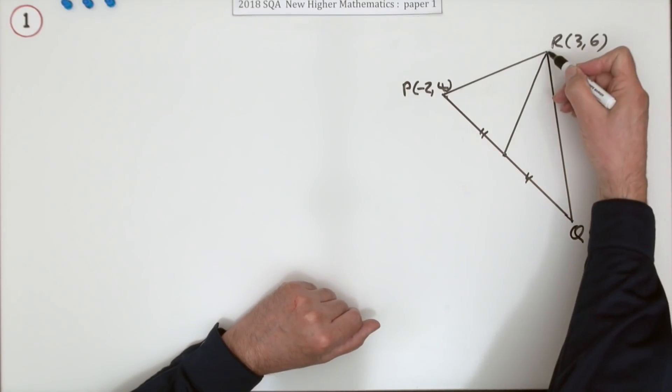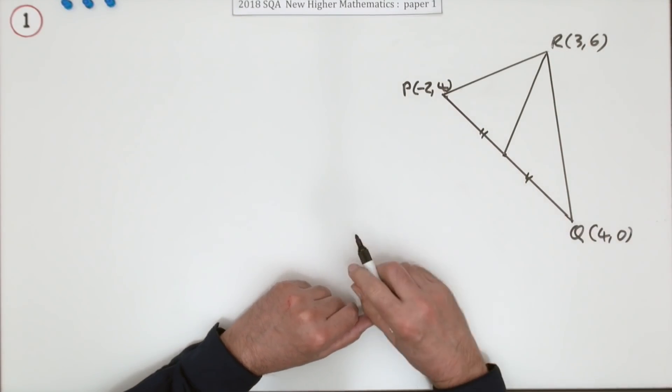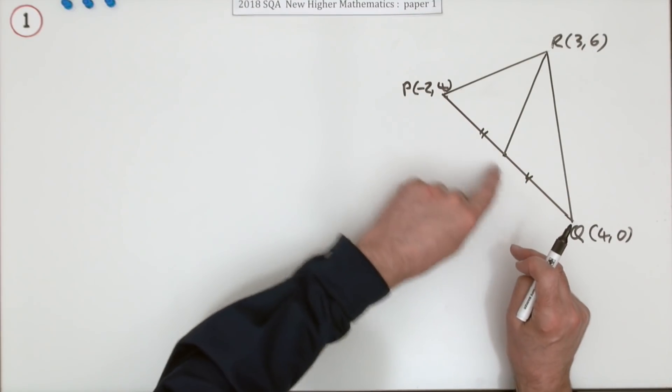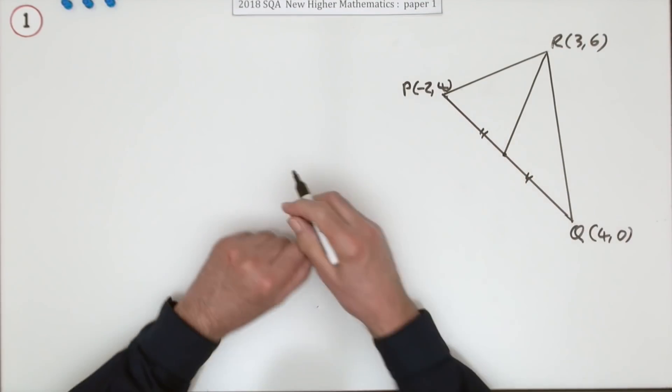There it is there, going from a vertex to the middle of the opposite side, shown by those equal marks. That shows it's being bisected. This point's in the middle.